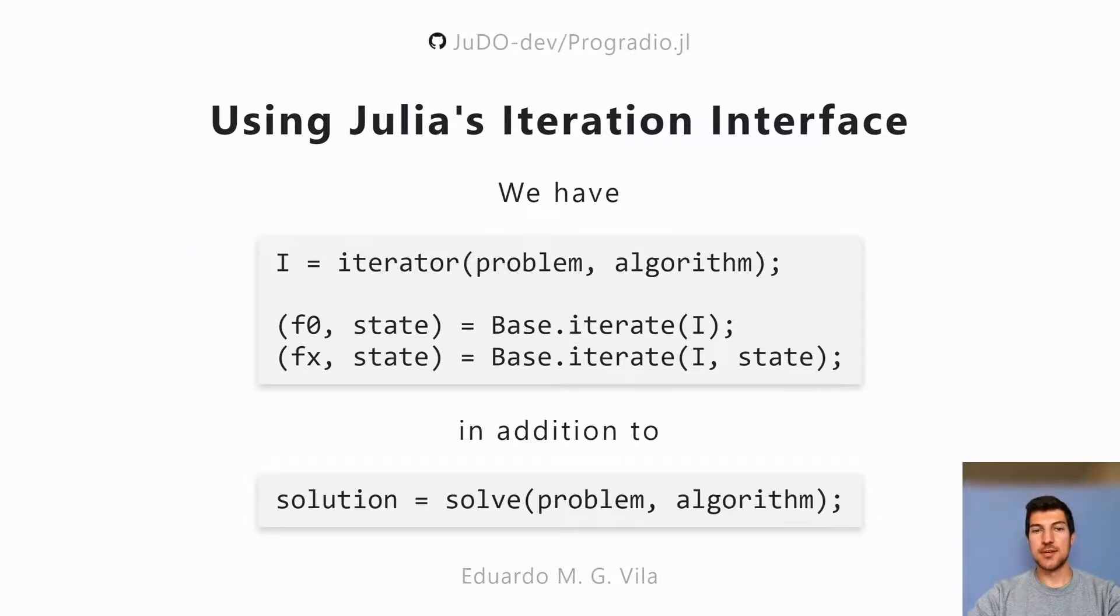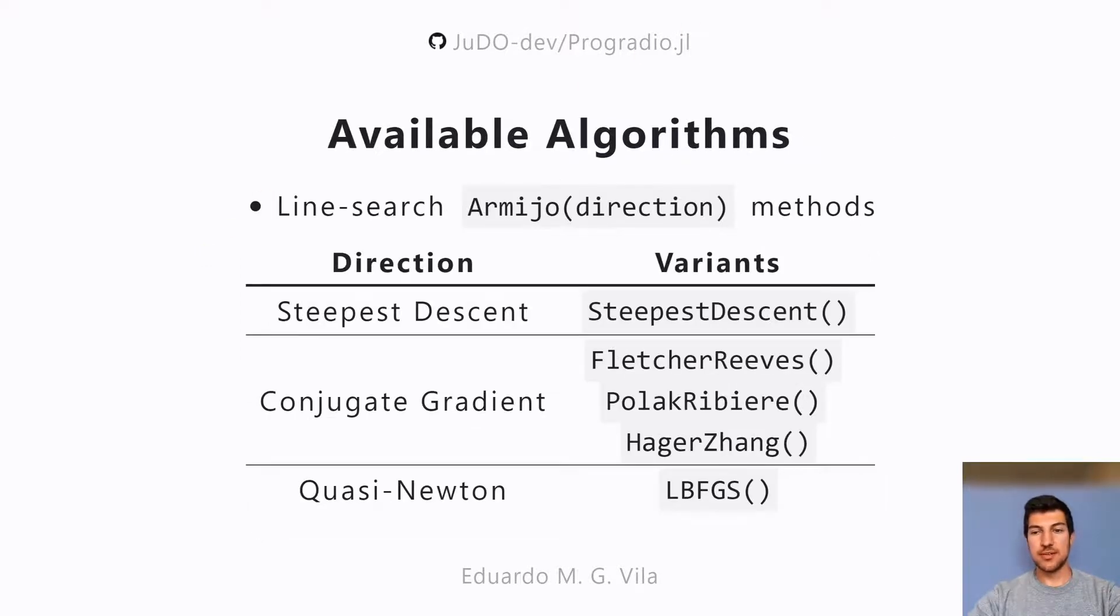I have implemented an Armijo-type method. This does the line search using possibly different descent directions. For example, the steepest descent, for the conjugate gradient class we have Fletcher-Reeves, Polak-Ribiere, and Hager-Zhang, and for quasi-Newton we have the limited memory BFGS direction.